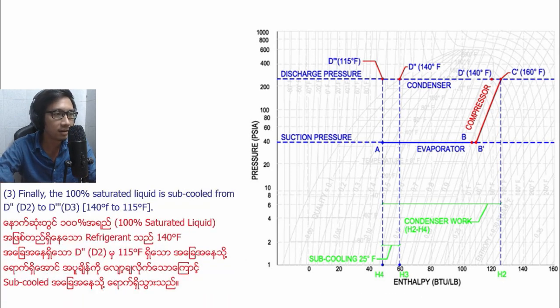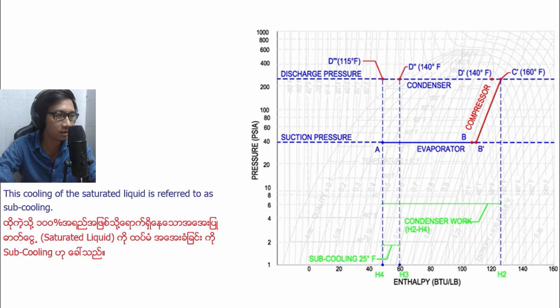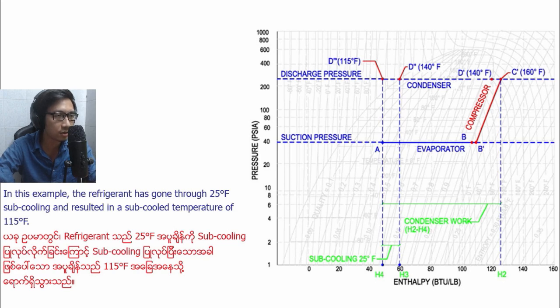Number three: finally, the 100% saturated liquid is subcooled from D2 to D3, 140 degrees Fahrenheit to 115 degrees Fahrenheit. Once the refrigerant is fully saturated liquid, any additional heat loss results in a decrease in temperature. This cooling of the saturated liquid is referred to as subcooling. In this example, the refrigerant has gone through 25 degrees Fahrenheit and results in a subcooling temperature of 115 degrees Fahrenheit.